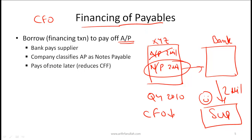In summary, the company is borrowing from the bank to pay off accounts payable. The bank pays the supplier, the company reclassifies accounts payable as notes payable, and when the company later pays off the notes payable, that reduces CFF. CFO remains artificially high. A smart analyst needs to recognize that this note payable should really be classified as an operating expense.